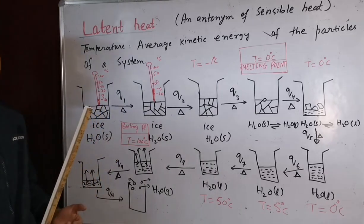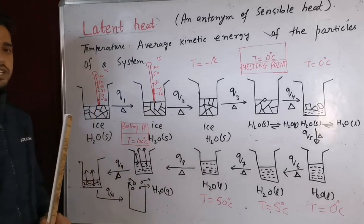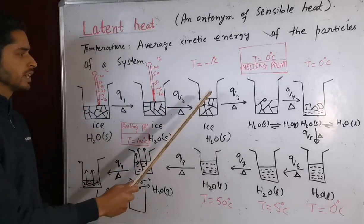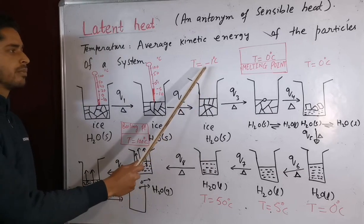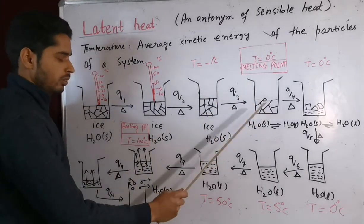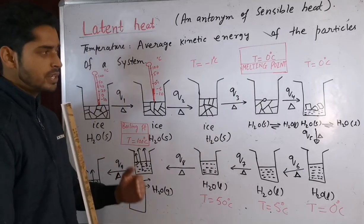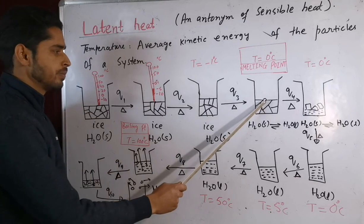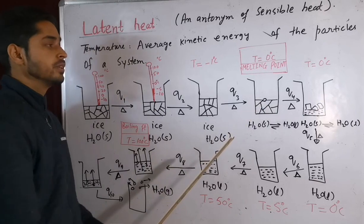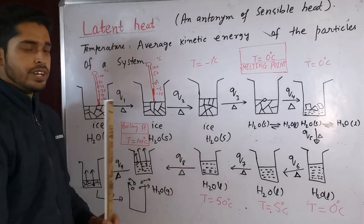The beaker contains ice at minus ten degree Celsius — the mercury is at that level. Now we heat this system. The temperature of the system increases — the mercury rises. Temperature increases from minus ten to minus five degree Celsius. We heat more, temperature becomes minus one degree Celsius. We heat more and the temperature of the ice increases further, reaching zero degree Celsius. At exactly zero degree Celsius, there was the first appearance of a liquid droplet — solid has started to convert into liquid. This temperature at which solid changes to liquid is called the melting point of water.